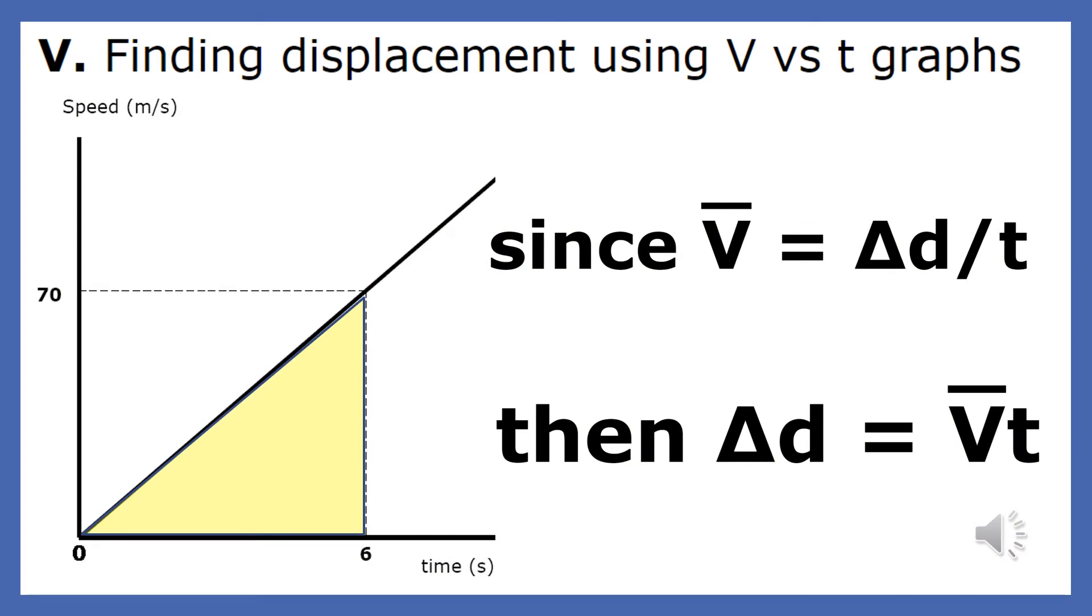Since the plot here shows velocity versus time, if I'm interested in finding the object's displacement, I must find an equation that contains d, v, and t. That equation is average velocity equals delta d over delta t.